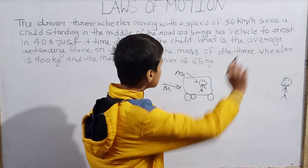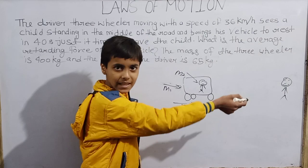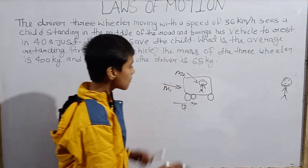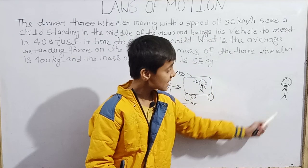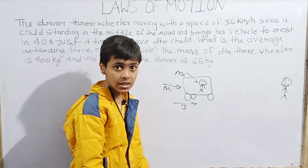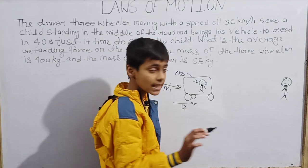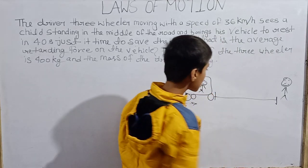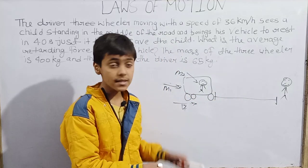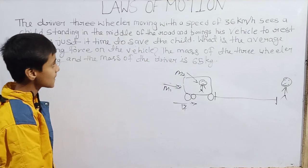At a certain instant the driver sees a child standing in the middle of the road. Initially the vehicle has some velocity — the initial velocity u. As he sees the child, there will be a reaction time of perhaps 0.2, 0.3, or even one second. Then he brakes, and there will be a stopping distance until finally the vehicle stops. We assume all objects are point particles.